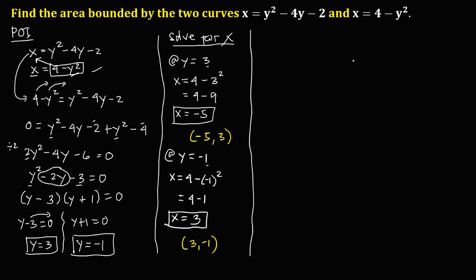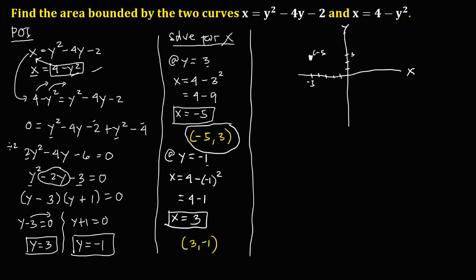Plotting these on a graph with y on the vertical axis and x on the horizontal axis: the first point of intersection is at (negative 5, positive 3), and the second point of intersection is at (positive 3, negative 1). These are the two points of intersection.